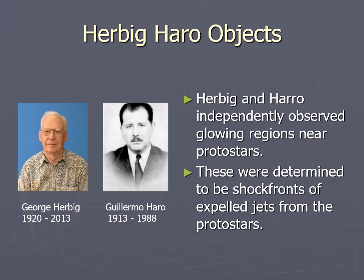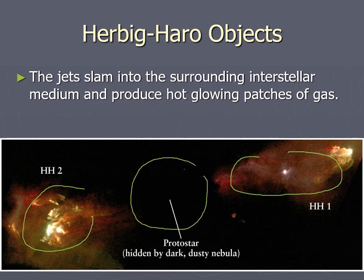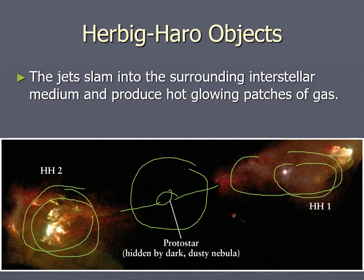Those glowing patches were originally discovered by George Herbig and Guillermo Haro — Haro being a Mexican astrophysicist. They discovered these bright spots near where stars are forming, and we call them Herbig-Haro objects. They were later determined to be shock fronts where the jets are slamming into the rest of the interstellar medium. This is Herbig-Haro 1 and Herbig-Haro 2; right in the middle, unseen, is the cocoon nebula blocking our view of the protostar and its jets.